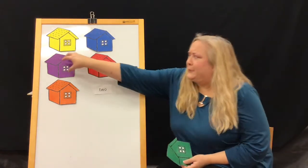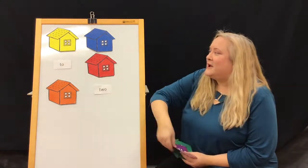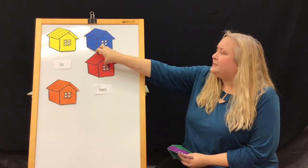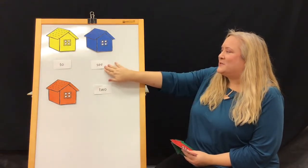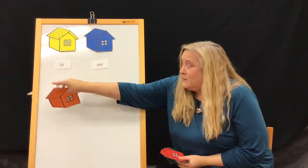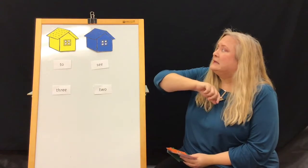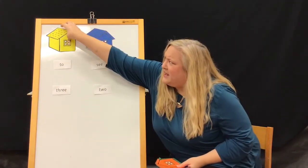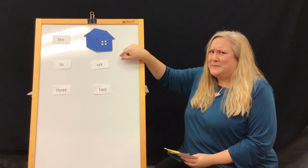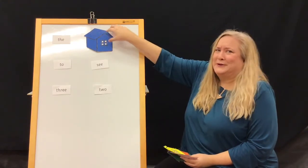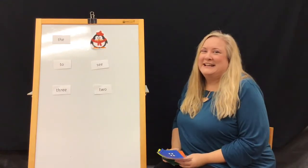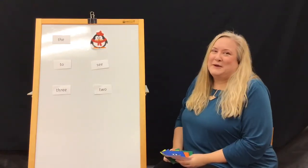What about purple? Nope. That's the word two. What about red? That's the word see. And the orange one? The word three. The yellow one? Let's try it. The word the. Is the penguin behind the blue house? I don't know. Let's see. There's our penguin. And that is a fun way to play with our sight words.